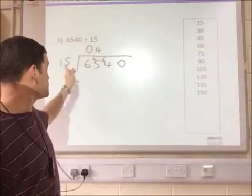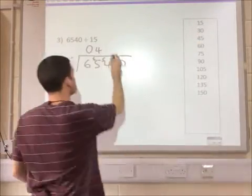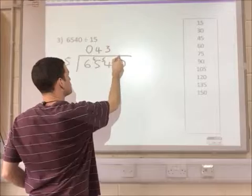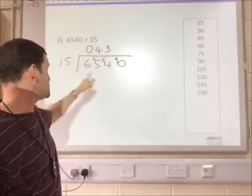Next, how many times does 15 go into 54? One, two, three. With a remainder of nine. And that gives me the last calculation I need to do.